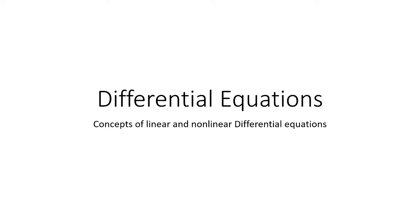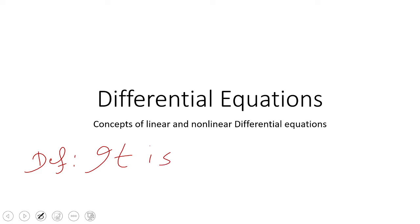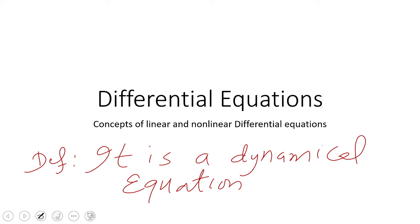We start with the types of ordinary and partial differential equations. A simple definition of a differential equation: it is a dynamical equation in which one variable is changing with respect to another. We can also call it an evolutionary equation, because one variable evolves with respect to another.